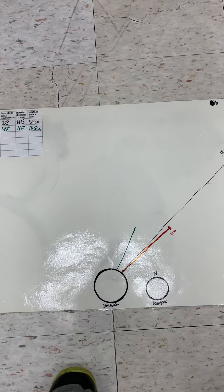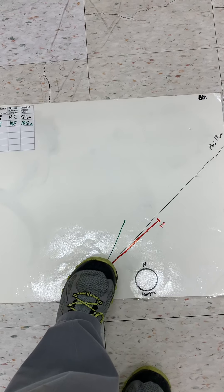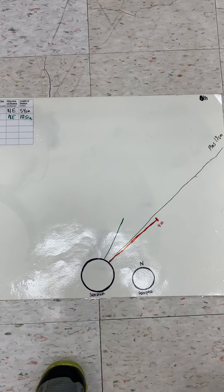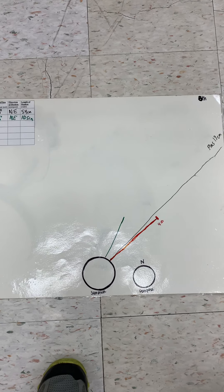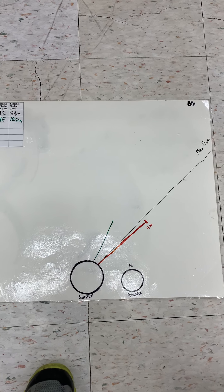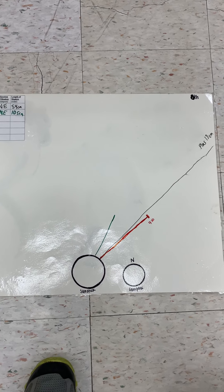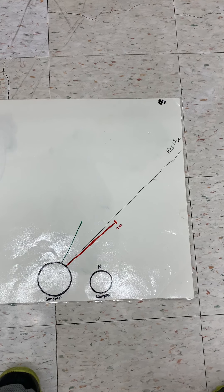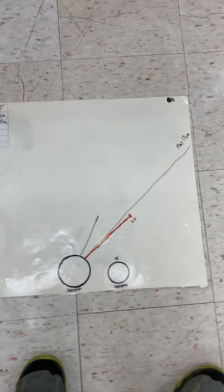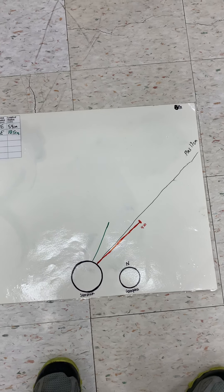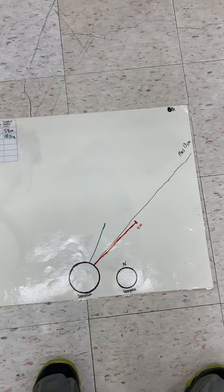For eighth period I did something fun: I put two lines — a green line and a red line. The green line was done in eighth period at 2:27, and the red line was done at 4 o'clock. The red line is longer and the green is shorter. The green line is 10.5 centimeters at 48 degrees. The red line is 14 centimeters — not only longer but also more to the right, so it's both longer and shifted rightward.